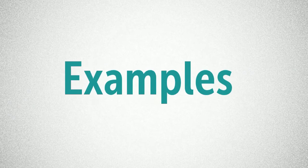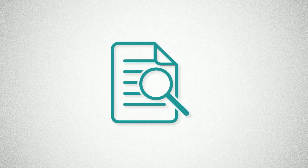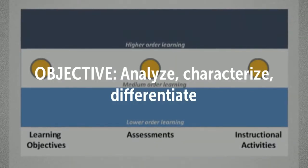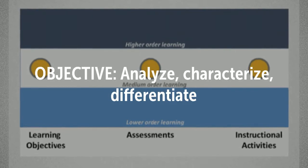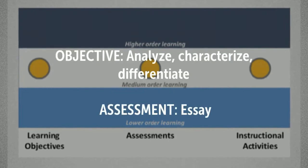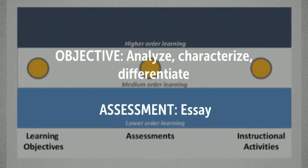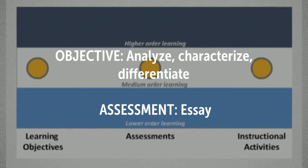So, let's talk about some examples. Let's say you want students to be able to analyze information. This is a higher order learning in Bloom's Taxonomy. So, your objectives would use verbs like analyze, characterize, compare or contrast, or differentiate. Your assessments can be pen and paper, such as multiple choice questions, essays,